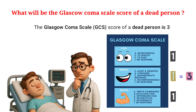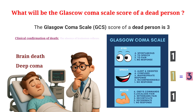GCS does not confirm death. It only assesses level of consciousness. A score of 3 indicates deep coma or brain death. But clinical confirmation of death requires additional assessments like absence of brainstem reflexes, ECG asystole, or apnea test.